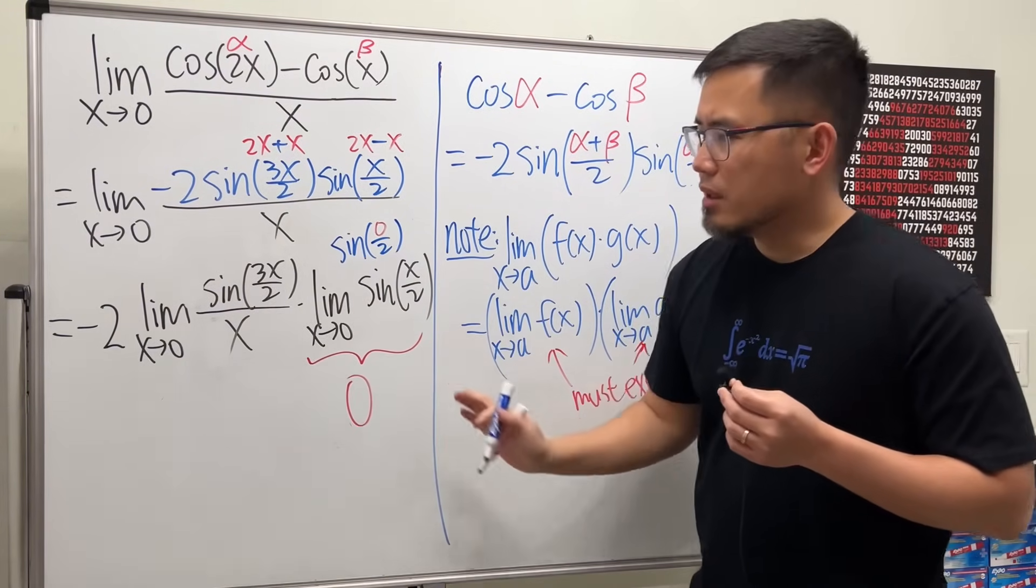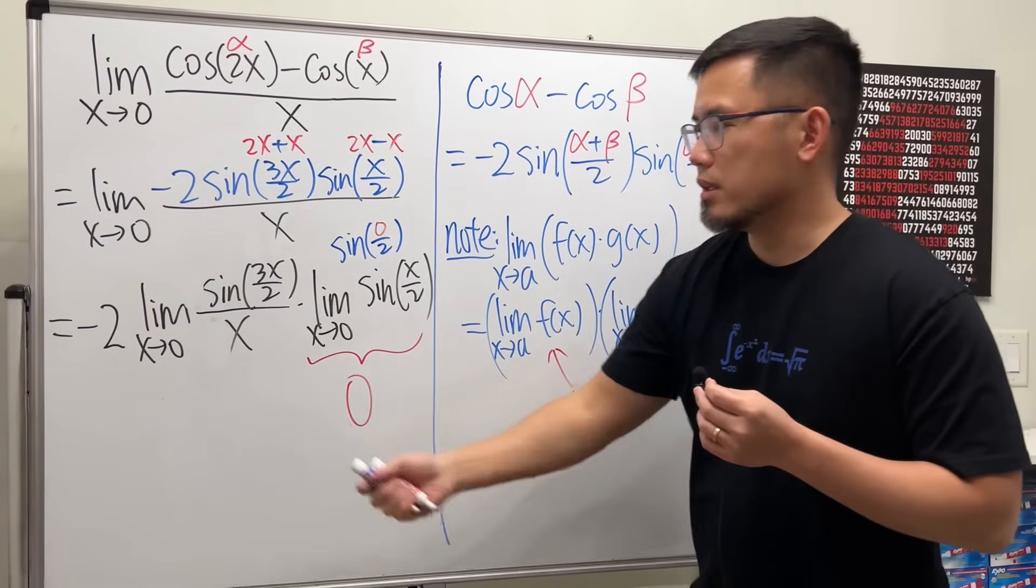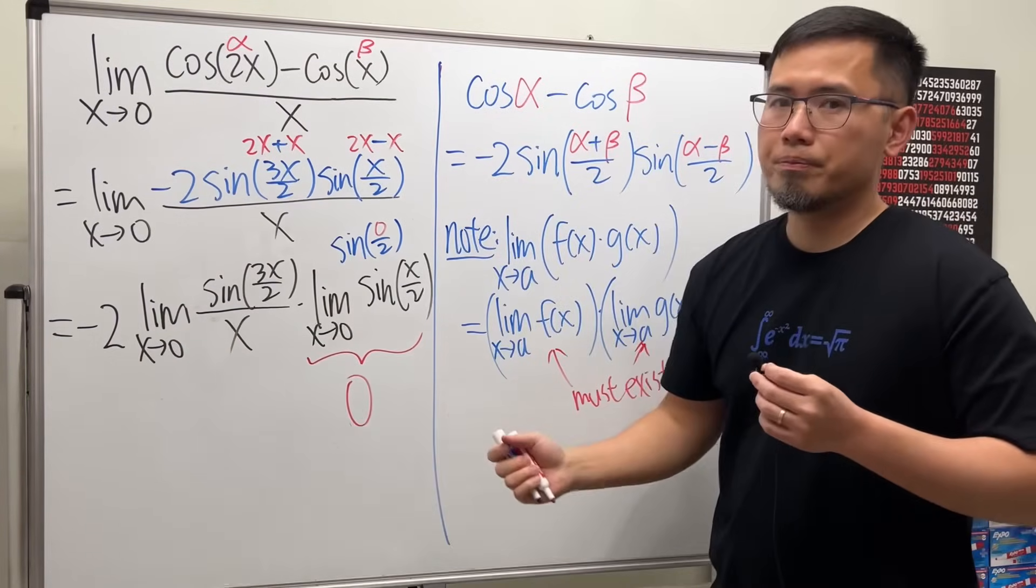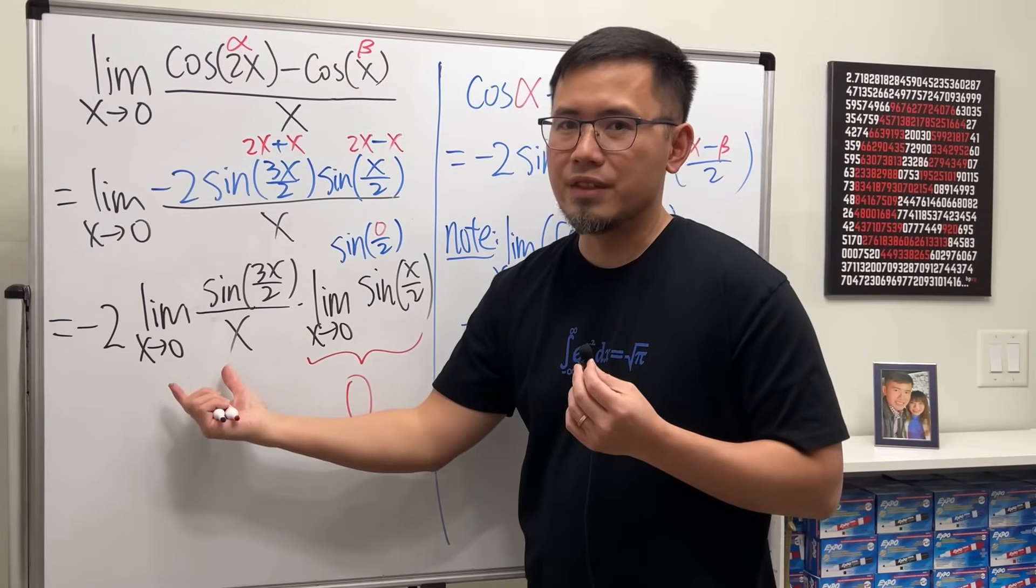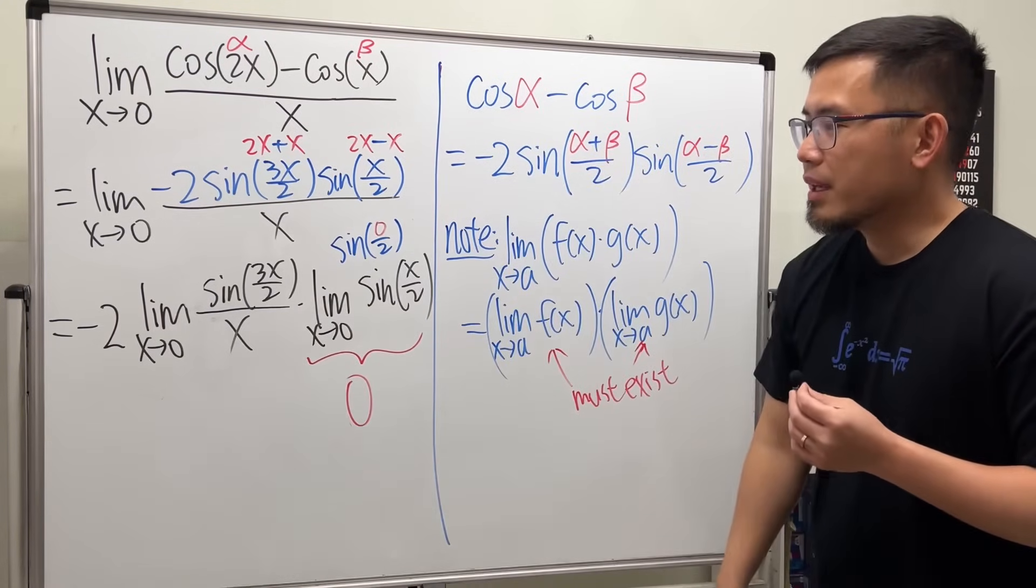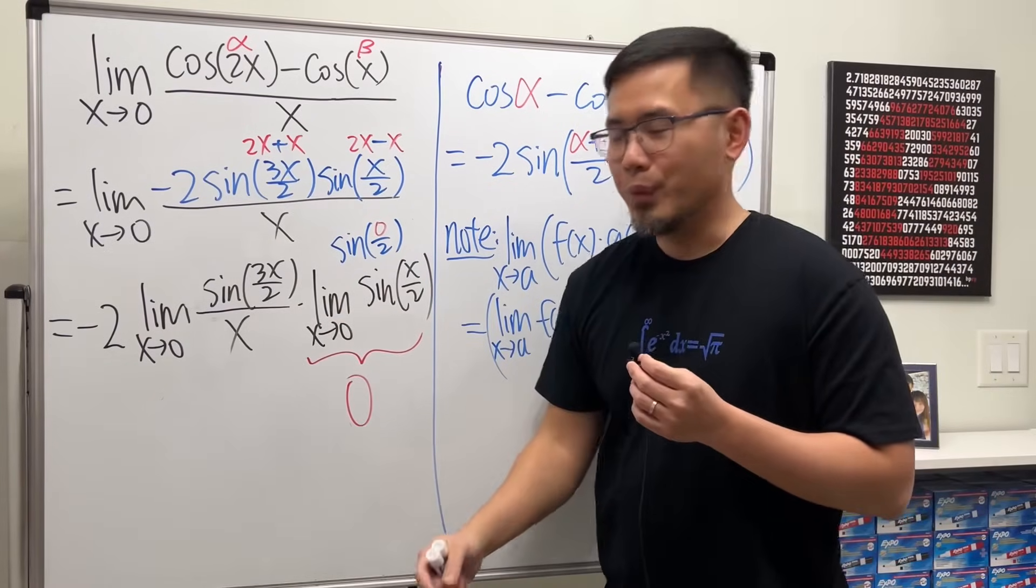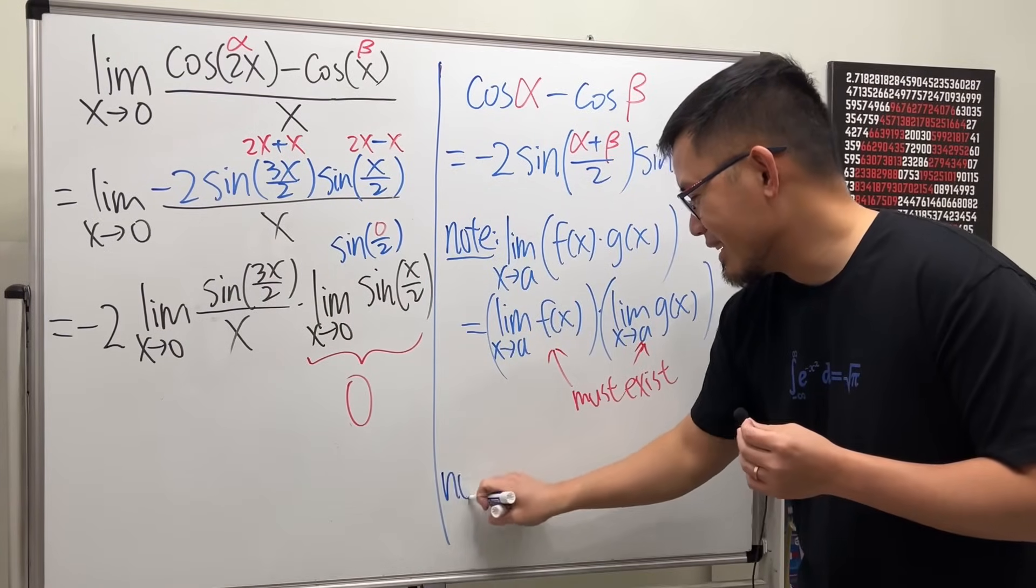Now, does that mean the whole thing will just be zero because it's this times this times zero? No, we have to do it carefully because we have to make sure that this does not give us infinity or anything weird.